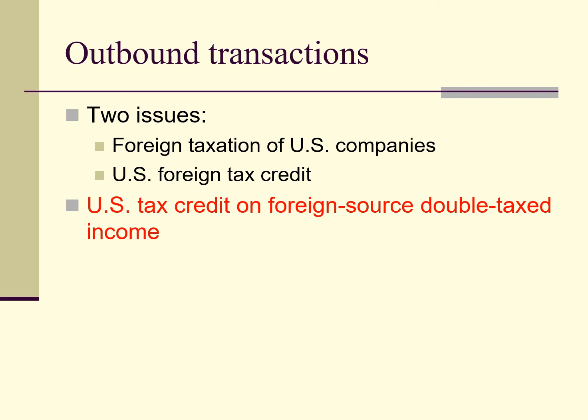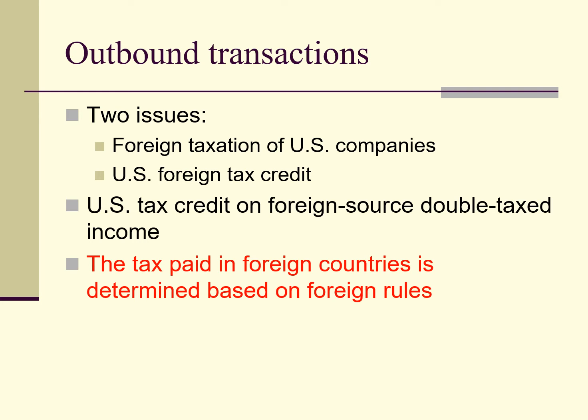Let's cover the foreign tax credit first. When a U.S. taxpayer pays income tax in a foreign country, that taxpayer can receive a credit to reduce U.S. tax that would otherwise be payable on that income taxed in the foreign country. This income is referred to as foreign source income. Essentially, the credit is for the U.S. tax applicable to the income that would otherwise be double taxed. The tax paid in the foreign country is determined based on the rules in the foreign country.